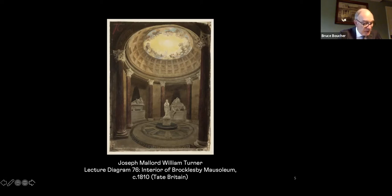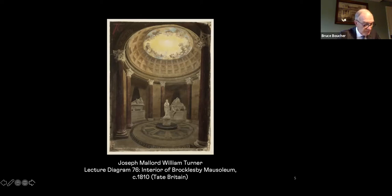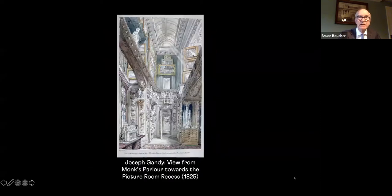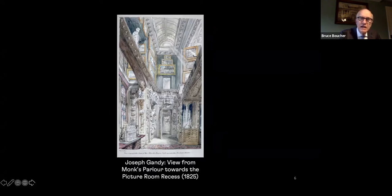In his lectures, Soane comments upon the poverty of Protestant churches as opposed to their Italian counterparts: 'Nothing can exceed the magnificence and richness of the Italian churches in painting, sculpture and architecture. Whilst the simplicity of our religion will not admit a single picture within its walls.' I've often thought that Soane compensated for this poverty of effect by transposing the sacred to the secular context. Here we're looking at a view of the Monk's Parlor shortly after it was completed in 1825, with this two-story effect with the light filtering through the yellow colored glass in the skylight, creating an effect similar to what Soane responded to in Gothic architecture.